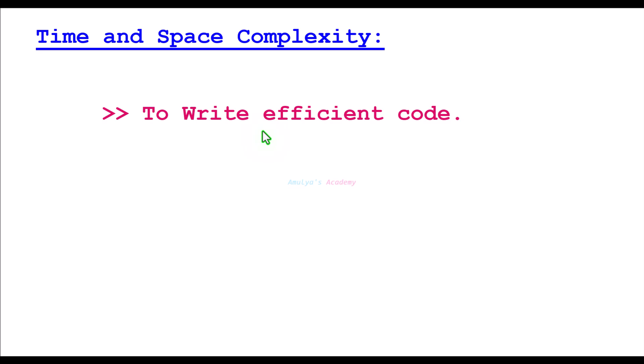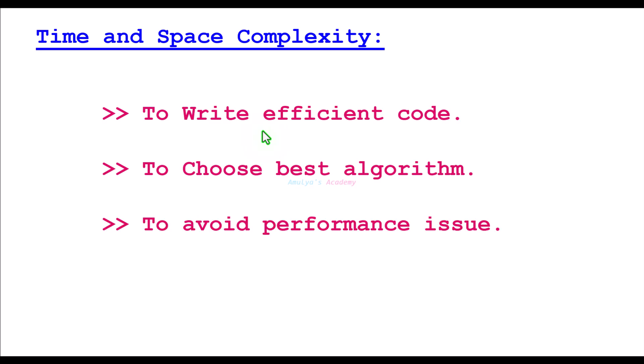Next, time and space complexity help you to choose the best algorithm. Multiple algorithms can solve the same problem. Complexity analysis helps you to compare and pick the best one. And also with space and time complexity, you can avoid performance issues. They help you prevent bottlenecks and system crashes.